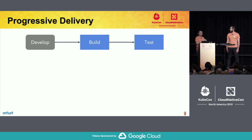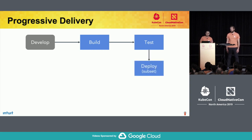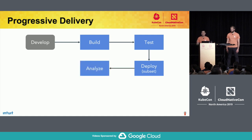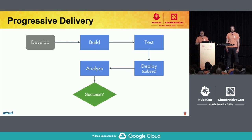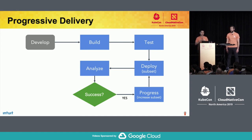Progressive delivery changes the CD pipeline: instead of deploying to your entire user base, you deploy to a small subset — for example, serving a small percentage of traffic to the new version. Then you wait and observe how that deployment went through analysis, measuring metrics you care about, such as Google's four golden signals: latency, error, traffic, and saturation. Then you determine if the rollout was successful. If it was, you progress and increase the subset of users. If not, you abort and roll back to the previous version.